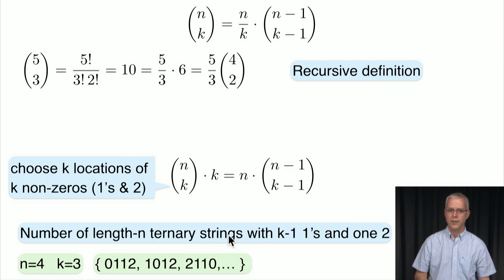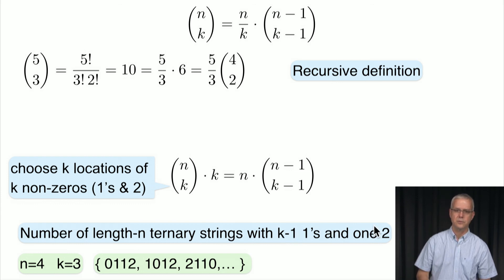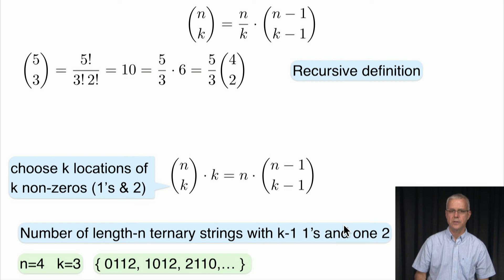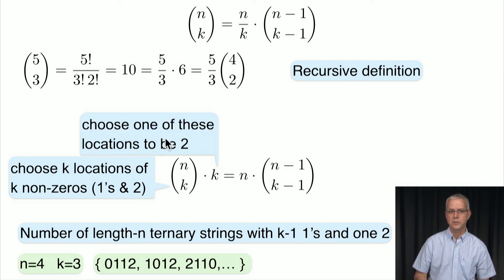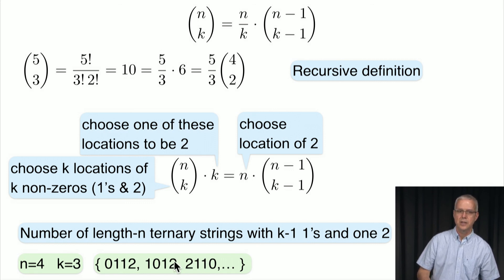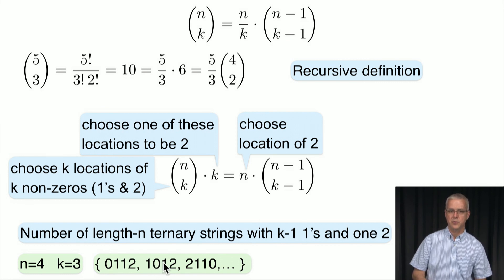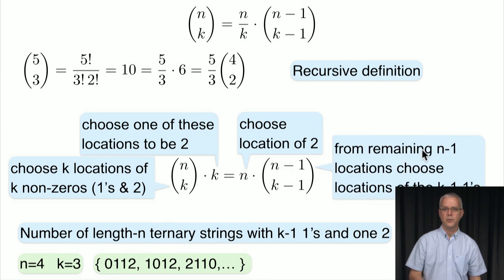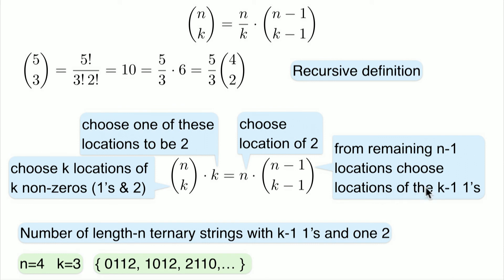Another way to count: first choose the location of the 2, which can be any of the n positions (n ways). Then from the remaining n minus 1 positions, choose the k minus 1 locations for the 1s — that's (n minus 1 choose k minus 1) ways. So the count is also n times (n minus 1 choose k minus 1). Since both expressions count the same set, they must be equal.